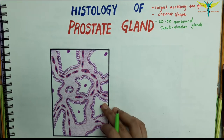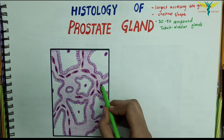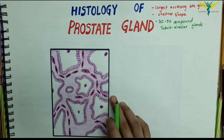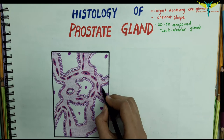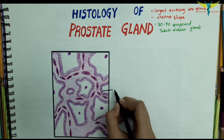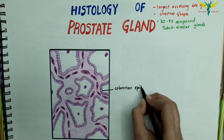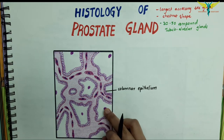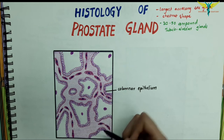In sections, the glandular tissue is seen in the form of numerous follicles, which are lined by columnar epithelium. This glandular tissue is embedded in a prominent fibromuscular stroma.